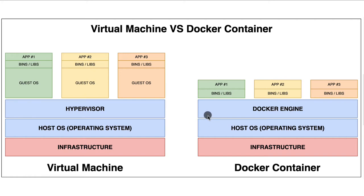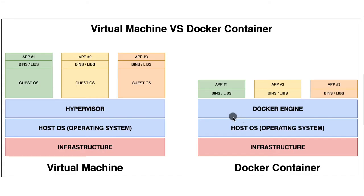Regarding resource efficiency, Docker containers share the host operating system and run as isolated user-space processes, resulting in lower resource overhead, faster startup times, and increased application density per host compared to virtual machines. Each virtual machine runs a full operating system, which leads to higher resource consumption, slower startup times, and lower application density per host.